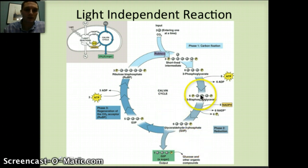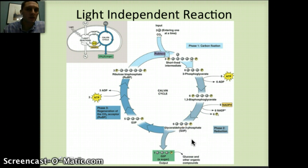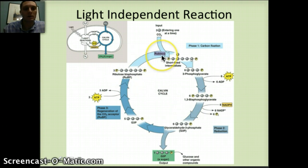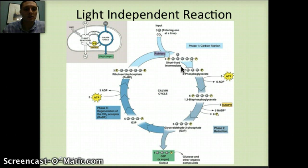Going back to the beginning: the six-carbon molecule splits into two three-carbon molecules. One of them, slightly modified by ATP and NADPH, is released as G3P. The other continues through the cycle and is used to regenerate RuBisCO, which requires three ATP molecules. Through this whole process we use a total of nine ATP and six NADPH to produce one G3P molecule, which is then combined with another G3P to produce sugar.